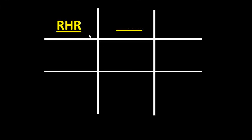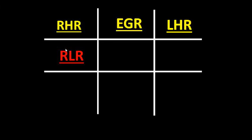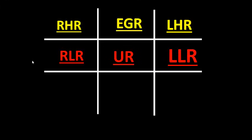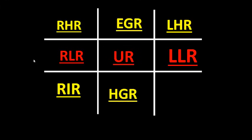We're going to have the right hypochondriac region, then the epigastric region, after that the left hypochondriac region. Below comes the right lumbar region, the umbilical region, and the left lumbar region. Then the right iliac region, the hypogastric region, and the left iliac region.